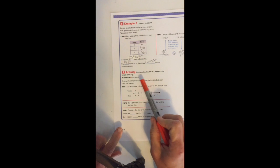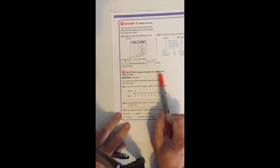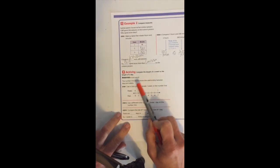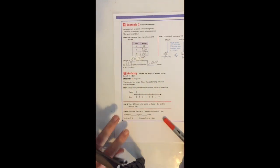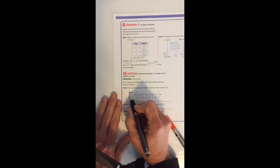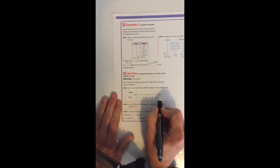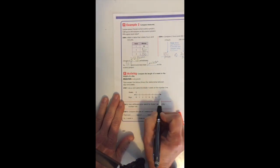For this next problem you need some colored pencils, so pause the video and grab some. We're going to compare the length of a week to the length of a day. The number line here shows the relationship between days and weeks. The top is weeks from zero to one, and days go from zero to seven because there are seven days in one week.